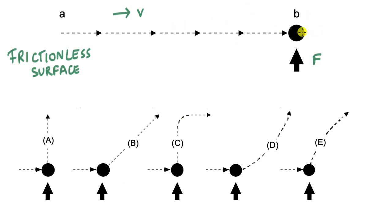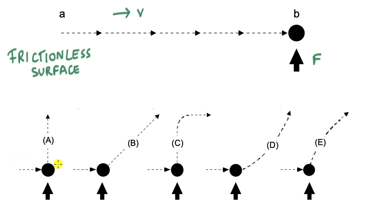The ball is going to the right with some speed V. There is a force which acts for a moment — you can think of it like a ball sliding on a frictionless surface and somebody kicks it — so there is a sudden force in the vertical direction. If you look at option A, this would make sense if the ball was not moving to the right.